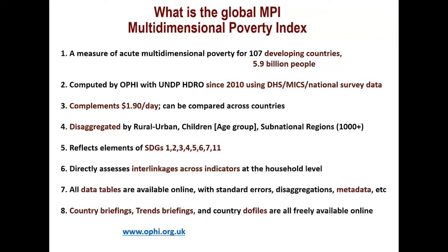We understand the MPI as complementing the $1.90 a day measure of international poverty — like that measure, it can be compared across countries. It can also be disaggregated to profile levels of poverty and their composition by rural and urban areas, by age group, and for 1,279 subnational regions in 98 countries. This is a particularly important year because we are 10 years away from the due date of the SDGs, when we are to end poverty in all its forms.